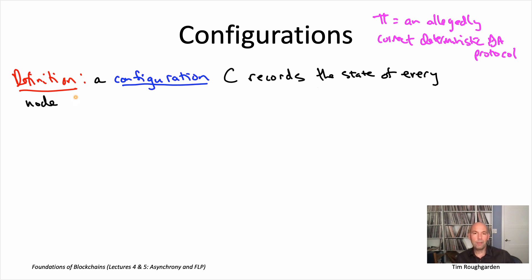Well, we need to keep track of the state of each of the nodes. So what does a node know at the moment? It always knows two things: what its private input is, and the sequence of messages it has received thus far. So configuration will encode that information for each of the n nodes. And then the other part of the snapshot is which messages have been sent but not yet delivered - what's the contents of the message pool capital M?